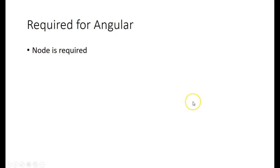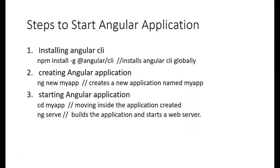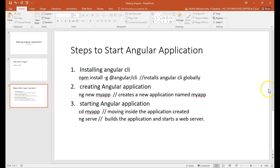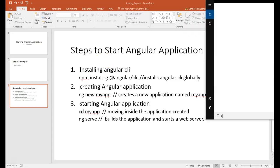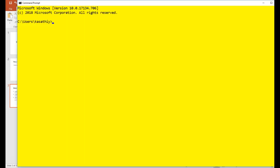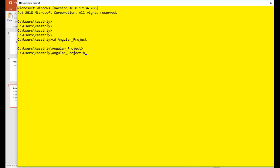The next step for starting an Angular application is installing Angular CLI. Using 'npm install', I am going to install Angular CLI globally — the '-g' flag denotes globally. Let me go to the command prompt and navigate to my Angular project folder.